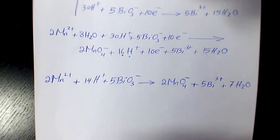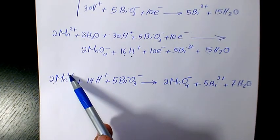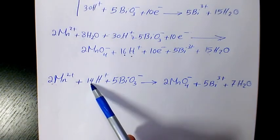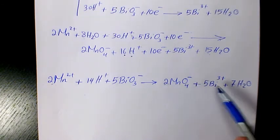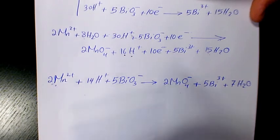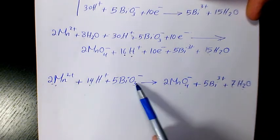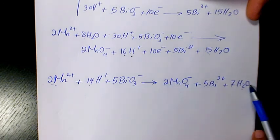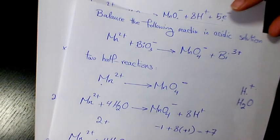Let's verify everything is balanced. For charge: left side is 2×2 + 14 - 5 = +13; right side is 2×(-1) + 5×3 = +13. Balanced. Mn: 2 on each side. Hydrogen: 14 on the left, 7×2=14 on the right. Oxygen: 5×3=15 on the left; 2×4 + 7×1 = 8+7=15 on the right. Bi: 5 on each side. Everything checks out — that's the final answer. I hope you enjoyed this video, please leave a comment if you have any questions, and have a great day.